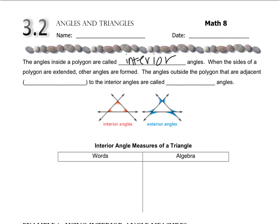Let's go back to fill in the blanks. The angles outside the polygon that are adjacent — meaning next to, that's the fancy word for next to — the interior angles are called exterior angles. When you hear the word adjacent, it just means two things that are next to each other.